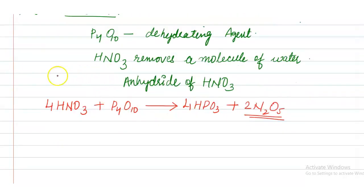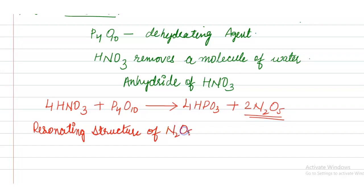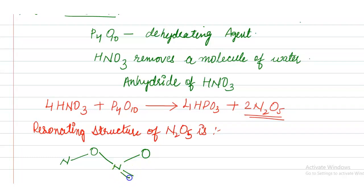The resonating structure of N2O5 is: N–O–N, with double bond O and double bond O on the nitrogen atoms, and a single bond O bridging them.